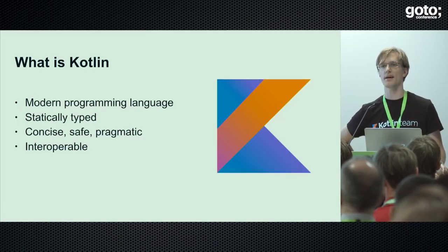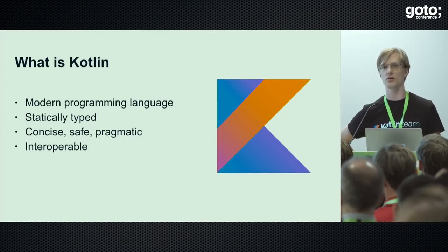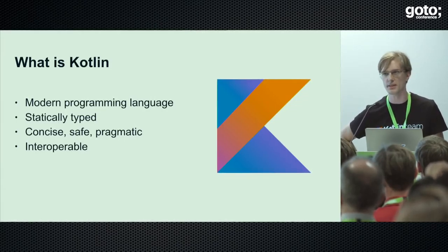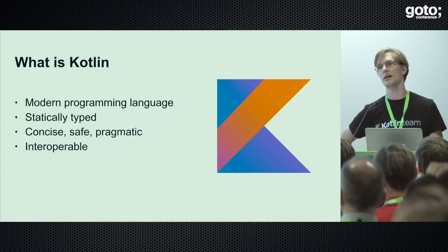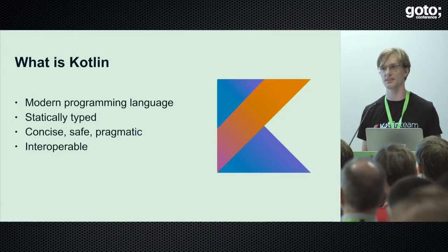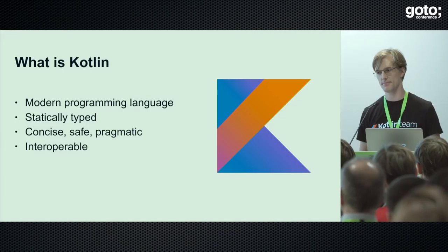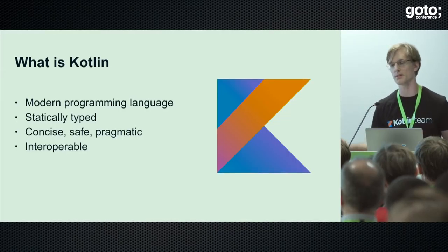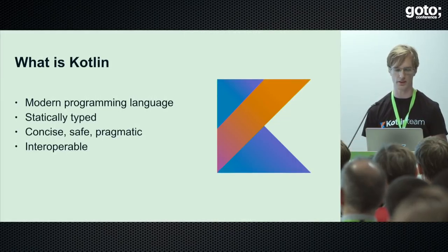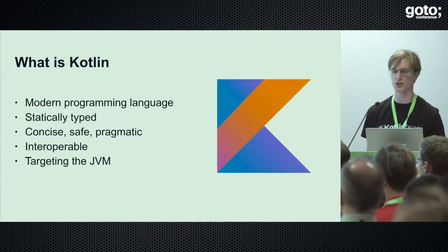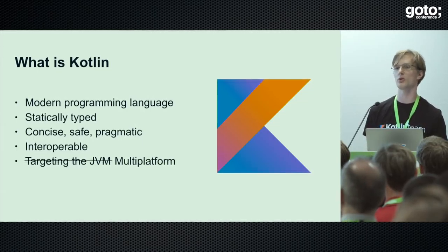Kotlin is also interoperable. Unlike Elm, which the previous talk was about, we are not trying to build our own universe. Instead, we focus on fitting as smoothly as possible onto all the ecosystems that Kotlin interacts with — on the JVM it's the Java ecosystem, in the browser it's the JavaScript ecosystem, and on native it's the large set of native libraries. You do not have to get rid of all those investments when you start using Kotlin.